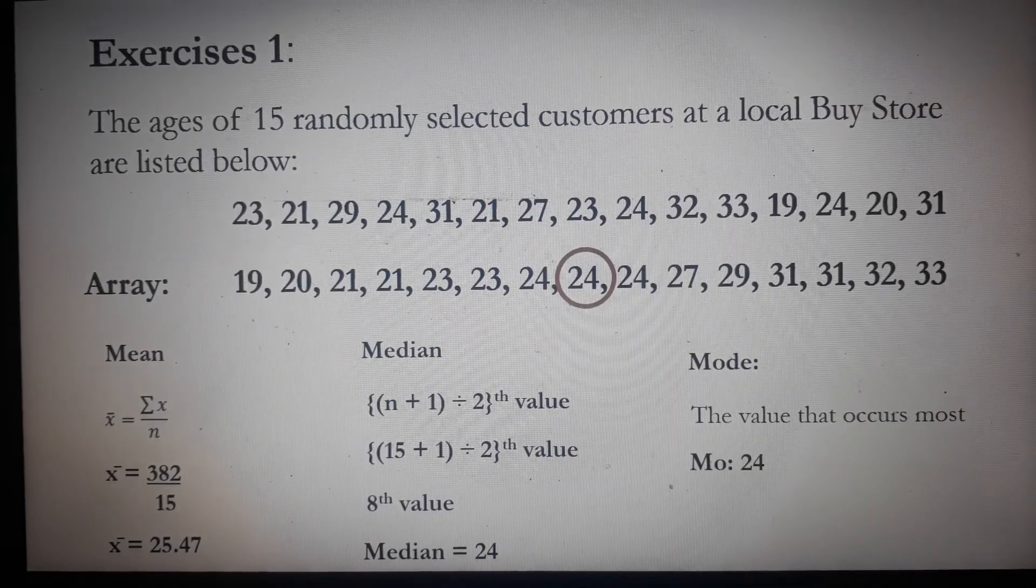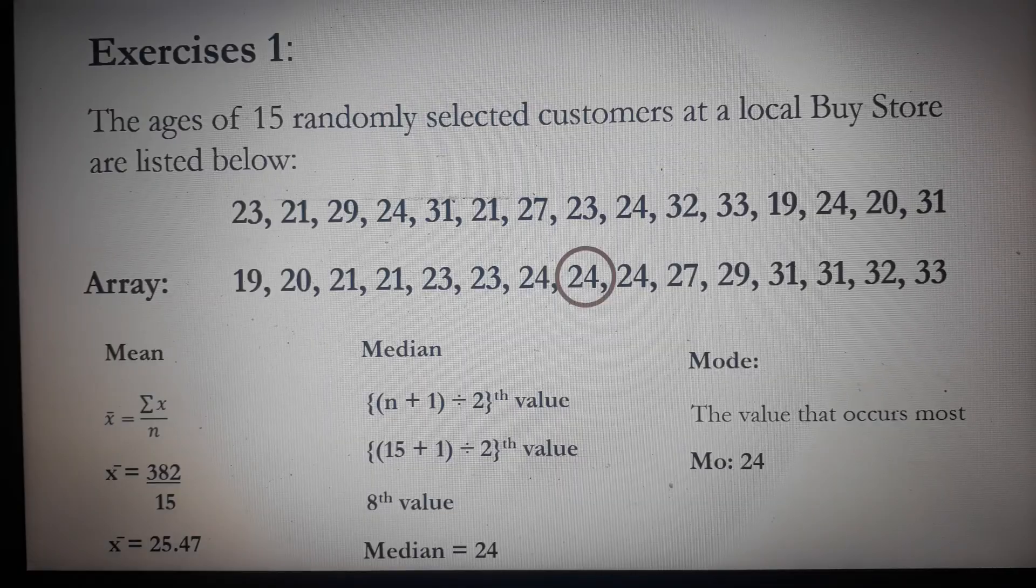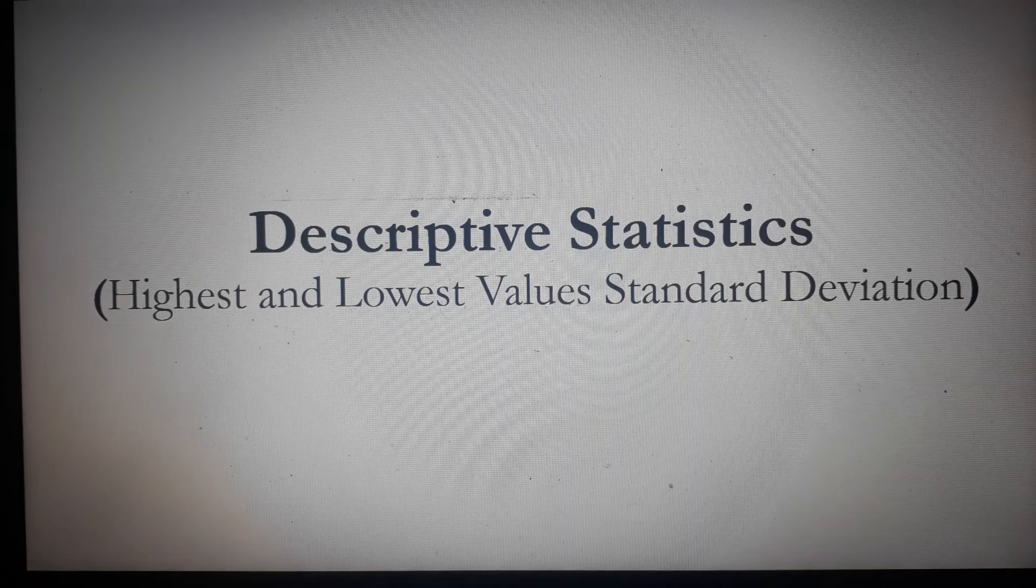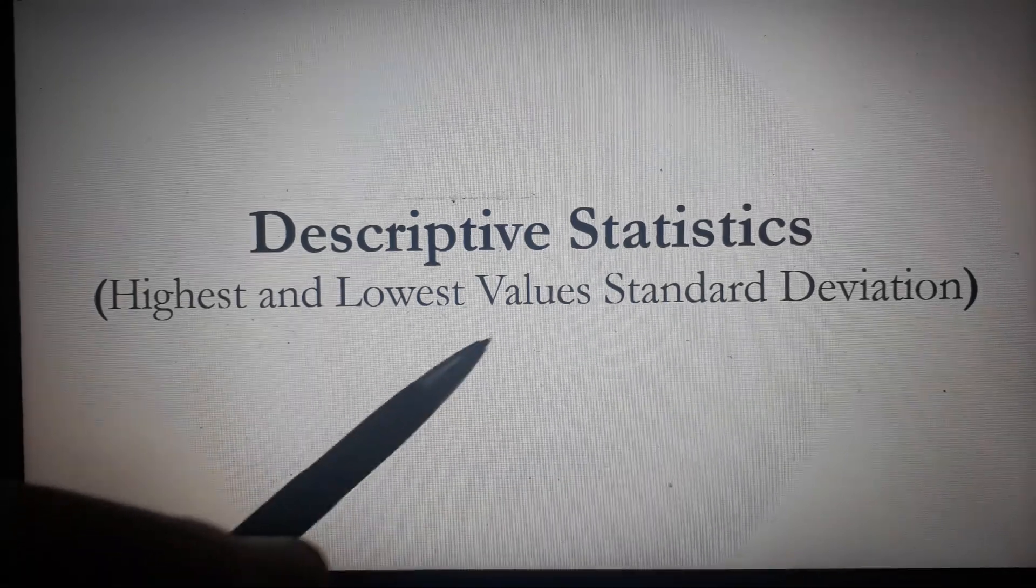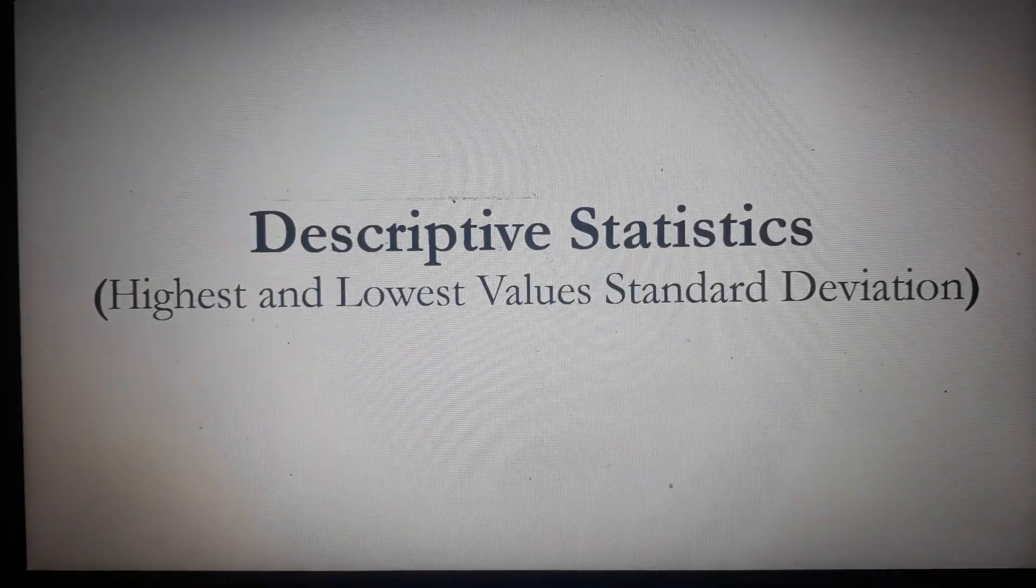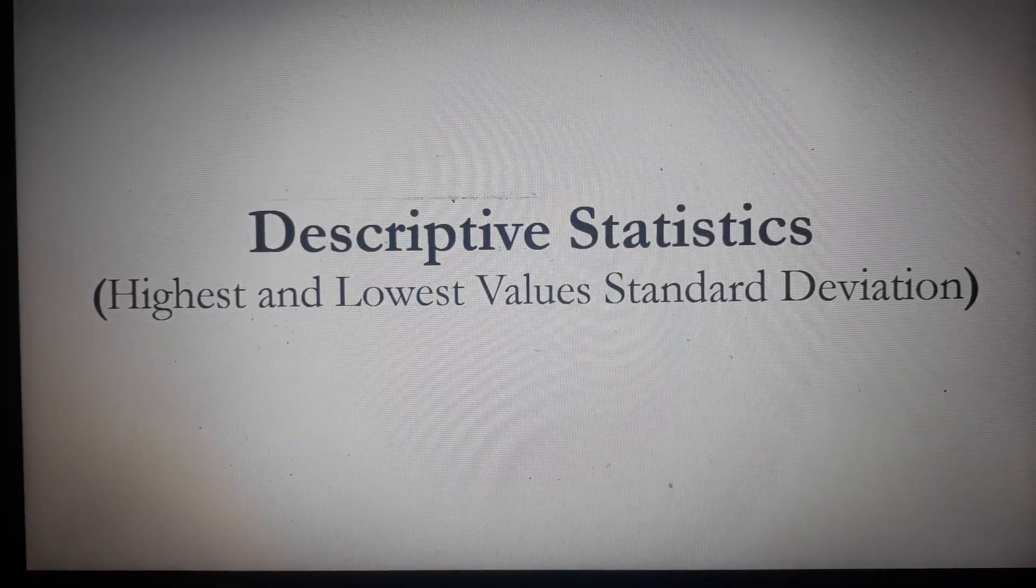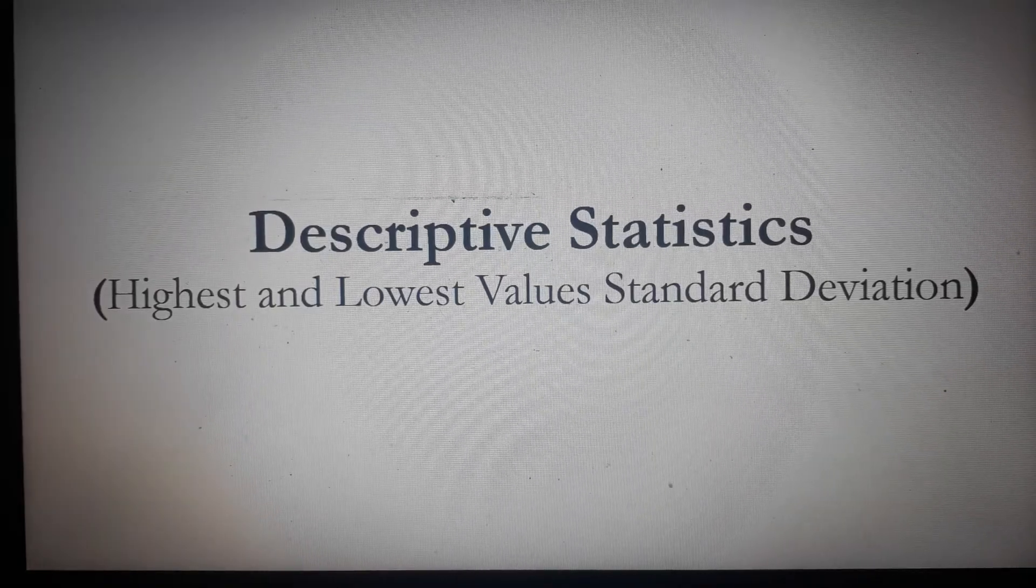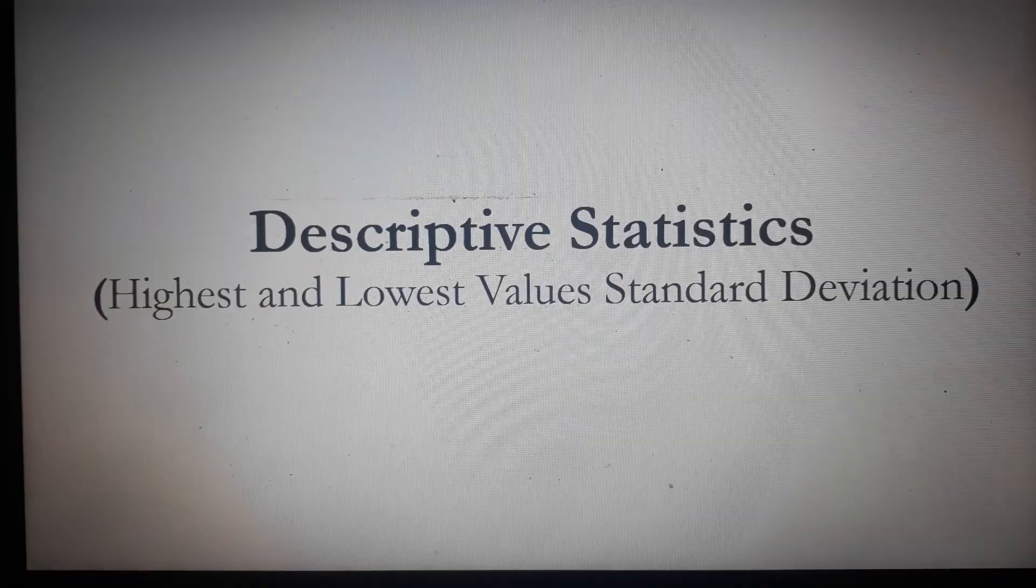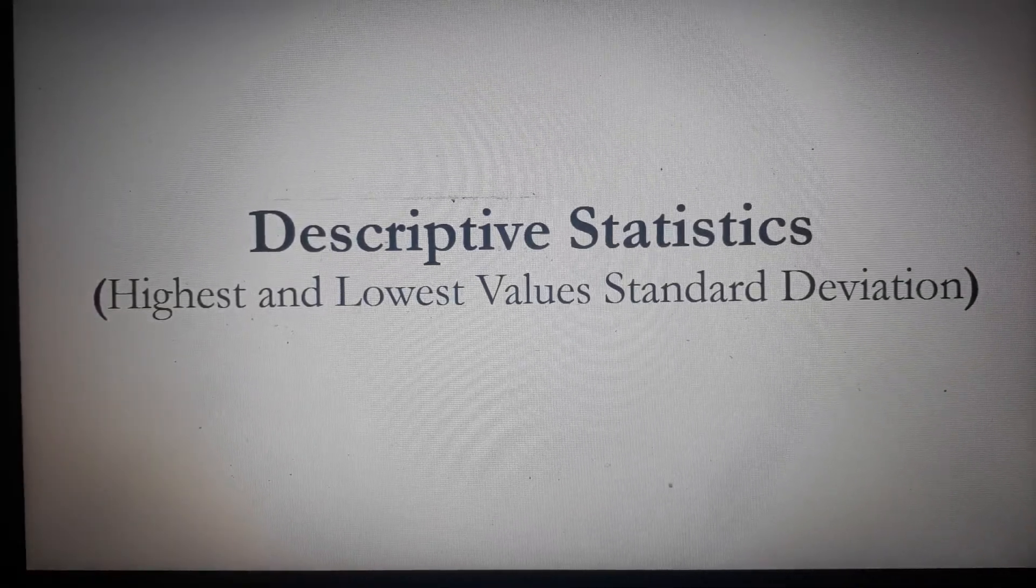Now, let's proceed to the statistics that can describe variations or differences in the data. We will include the highest and lowest values as well as the standard deviation. Standard deviation is a measure that summarizes the amount by which every value within a dataset varies from the mean. If the standard deviation is small, the data is less dispersed.